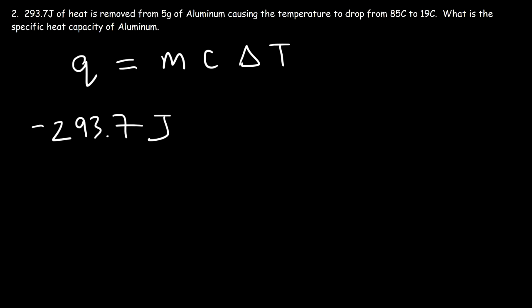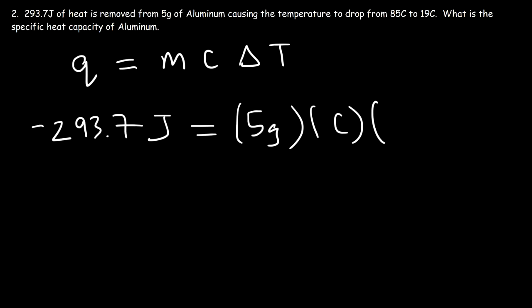When heat energy is released, we have an exothermic process — Q is negative. When a substance absorbs heat energy, Q is positive — we have an endothermic process. The mass in this example is 5 grams. Our goal is to calculate the specific heat capacity of aluminum.